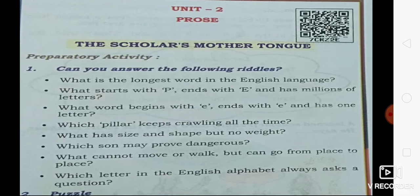The answer is 'eye' — E-Y-E. Fourth question: which pillar keeps crawling all the time? Write down 'caterpillar' — C-A-T-E-R-P-I-L-L-A-R. I hope you are writing in your textbook. Fifth: what has size and shape but no weight? Write down 'shadow' — S-H-A-D-O-W.